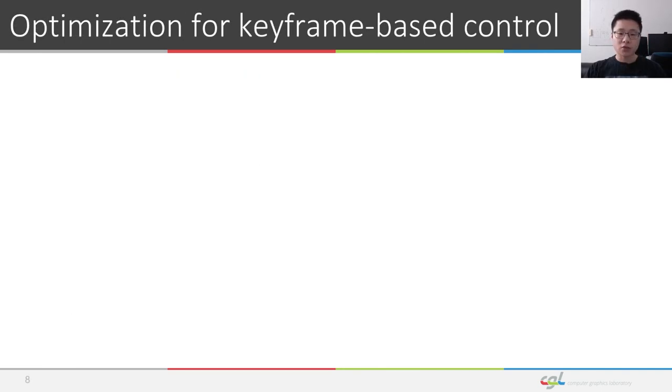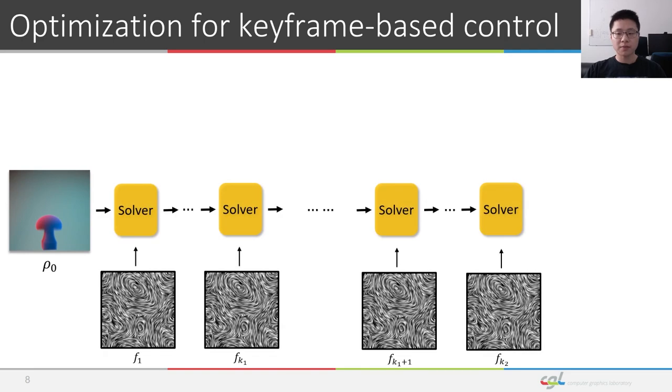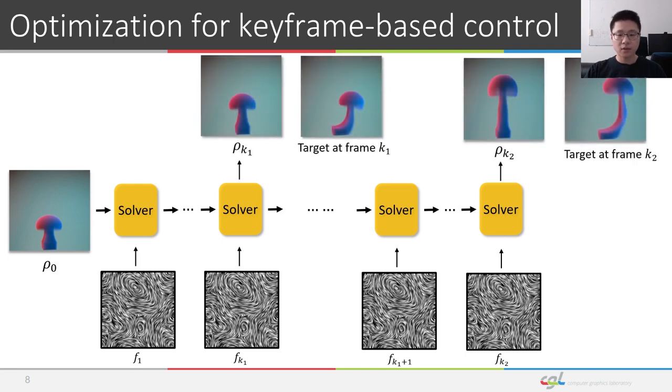We base our work on the adjoint method proposed by McNamara et al., and focus on smoke simulations. Let's look into more details of the pipeline for the optimization. The fluid solver advances the simulation at each time step under the influence of external forces. And the objective function is defined as the difference between the smoke computed by the solver and the target keyframes. For each iteration, the system computes the gradients of the objective function with respect to the control force field for the whole simulation range. Updating the control force fields with gradients computed by the adjoint method. The whole process is applied iteratively until convergence.